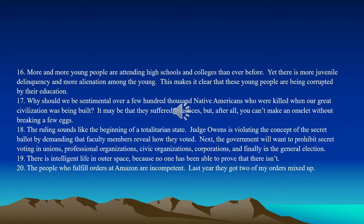Number eighteen: This ruling sounds like the beginning of a totalitarian state. Judge Owens is violating the concept of secret ballots by demanding that faculty members reveal how they voted. Next, the government will want to prohibit secret voting in unions, professional organizations, civic organizations, corporations, and finally in the general election. Do you recognize the pattern? It's always the same — this is a slippery slope. If we take that first step, the result will be a disaster.